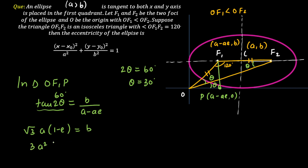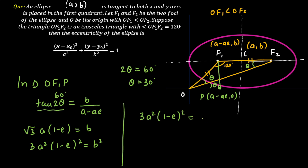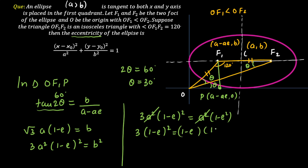Now substituting the ellipse relation b² = a²(1 minus e²): so 3a²(1 minus e)² = a²(1 minus e²). Cancelling a² from both sides, the objective is to find the eccentricity. This gives 3(1 minus e)² = (1 minus e)(1 plus e).